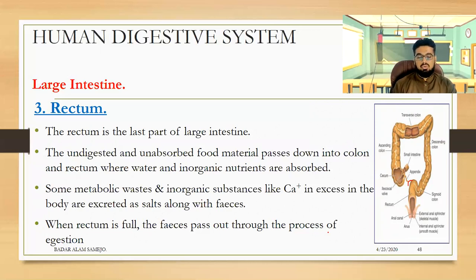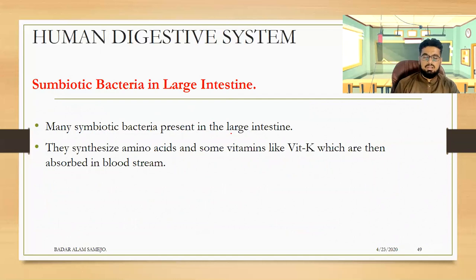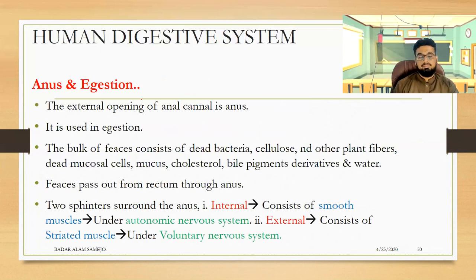Feces pass out through the process of egestion. Symbiotic bacteria in the large intestine synthesize amino acids and some vitamins like vitamin K, which are then absorbed into the bloodstream, after which the undigested food exits the body.